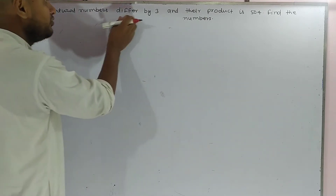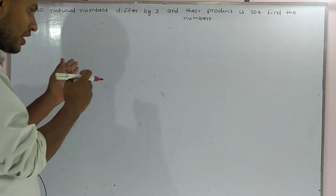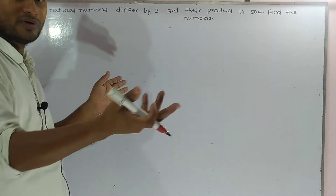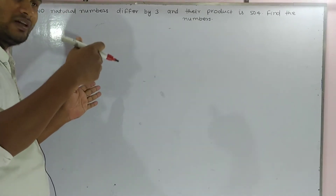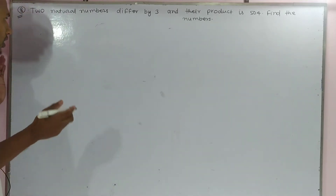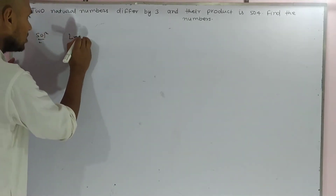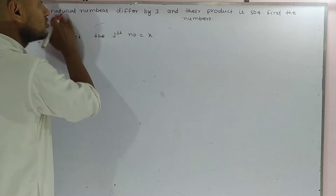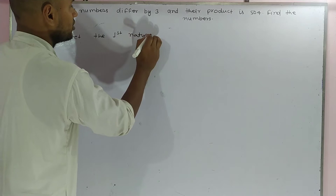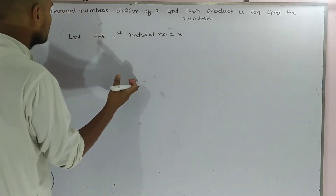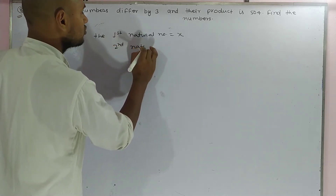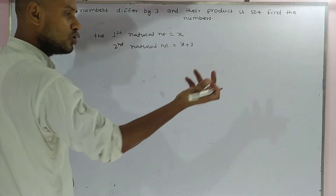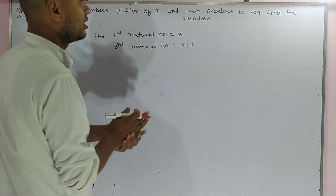The two natural numbers differ by 3. Let the first natural number equal to x. The second natural number, according to the question, becomes x plus 3, because they differ by 3. That means x plus 3 minus x becomes 3, so the second natural number is x plus 3.